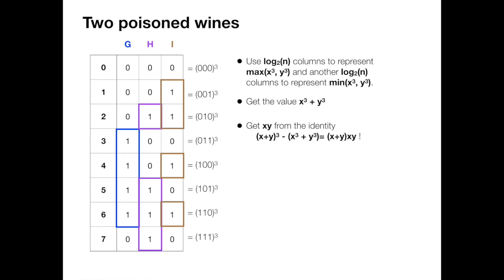Then we can sum that up to get the sum between x cubed and y cubed. Finally, we get x times y using the following identity, which is (x plus y) cubed minus (x cubed plus y cubed) equals (x plus y) times xy.